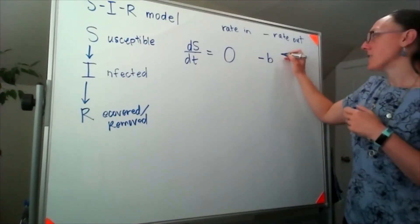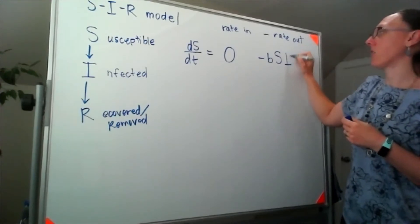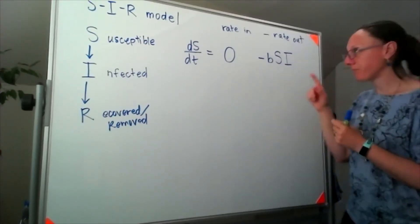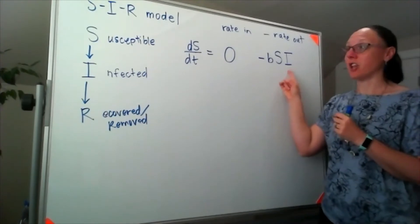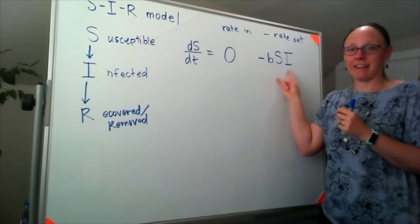It's proportional to the interaction rate between our susceptibles and our infectives. Meaning if I have a large population that's infected,